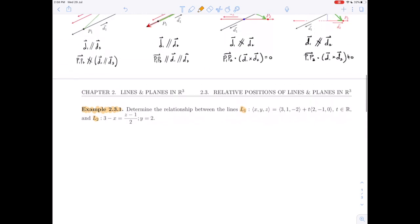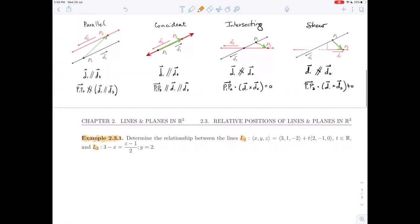Now to help us in this task, I have prepared a little review of the four possibilities for two lines in three-dimensional space. Two lines may be parallel, coincident, intersecting, or skew.